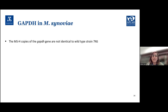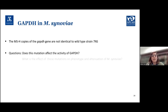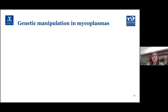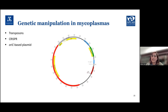Overall, the MSH copies of the GAPDH gene are not identical to those in wild-type 7NS. Key questions are: does this mutation affect the activity of GAPDH, and what is the effect of this mutation on the phenotype and attenuation of Mycoplasma synoviae? The best way to answer this is to complement MSH with wild-type molecules, which requires genetic manipulation of mycoplasma. This is somewhat limited because mycoplasma has a very small genome, but tools such as transposons, chromosomes, and OEC-based plasmids are available.